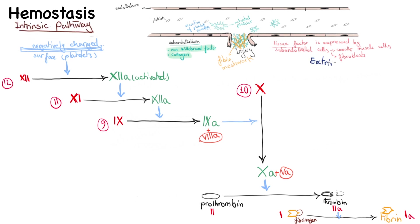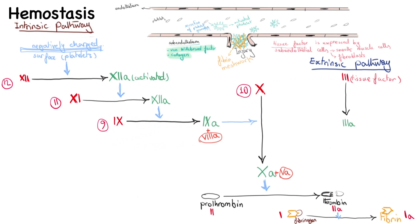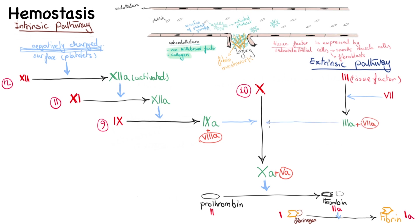We also have an extrinsic pathway. It starts with the conversion of coagulation factor 3 — also called tissue factor — into its active form 3a. Tissue factor is present in the subendothelium and is only expressed when the endothelium is injured, hence 'extrinsic' pathway. The conversion of tissue factor to its active form is activated by coagulation factor 7.